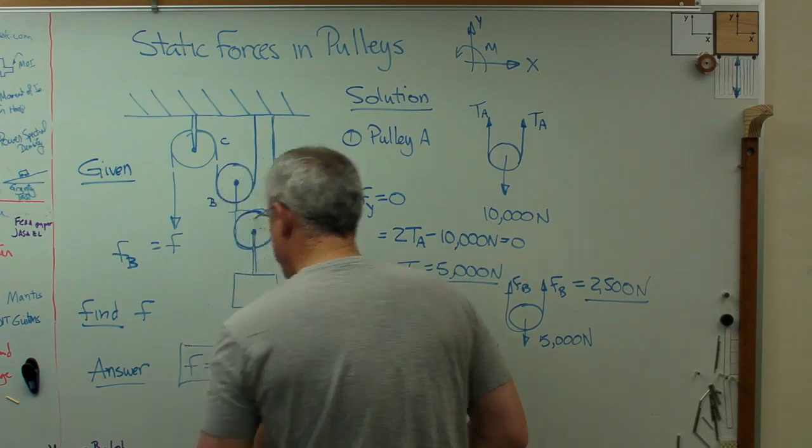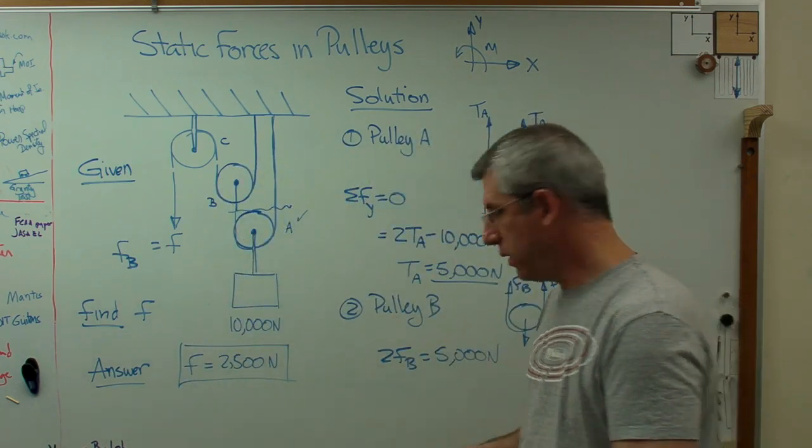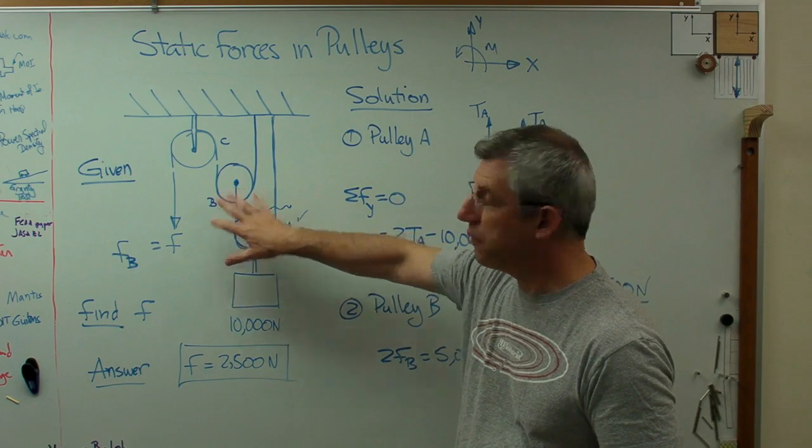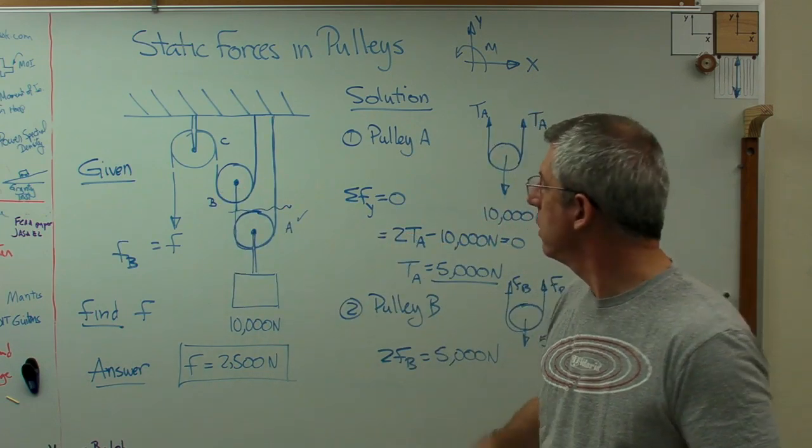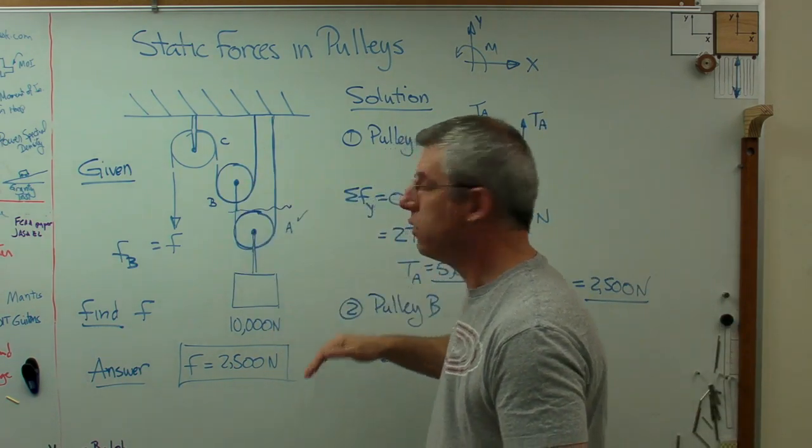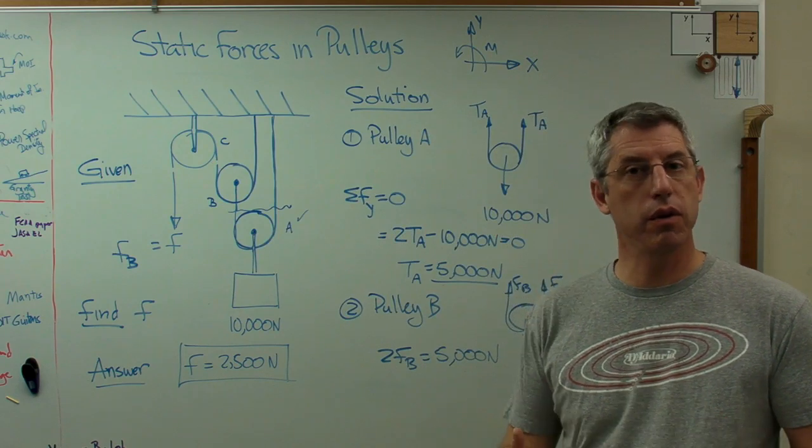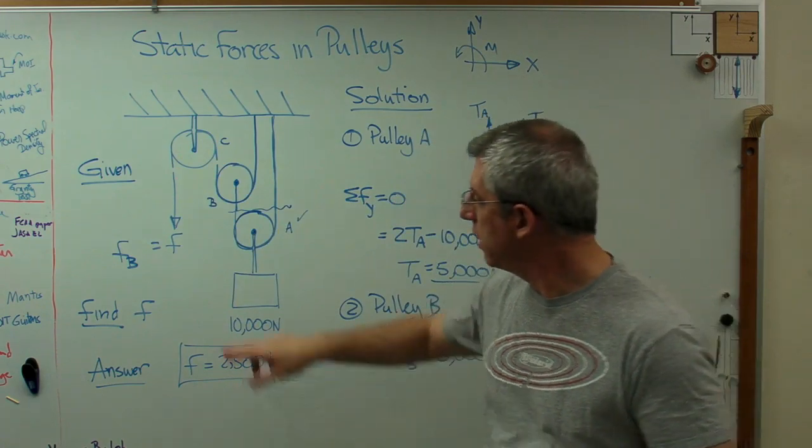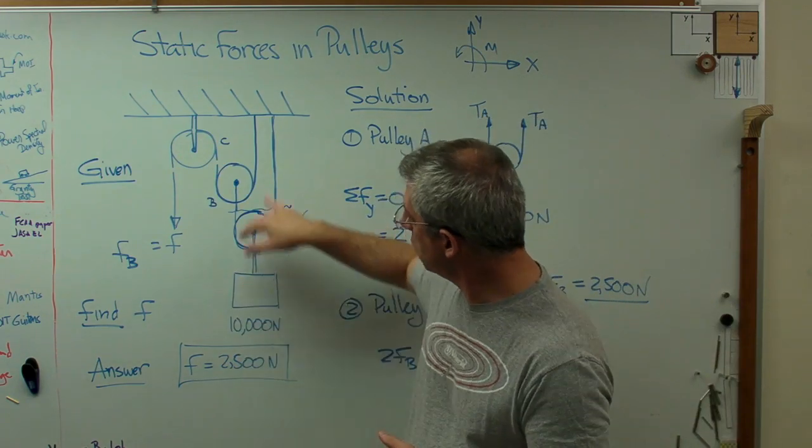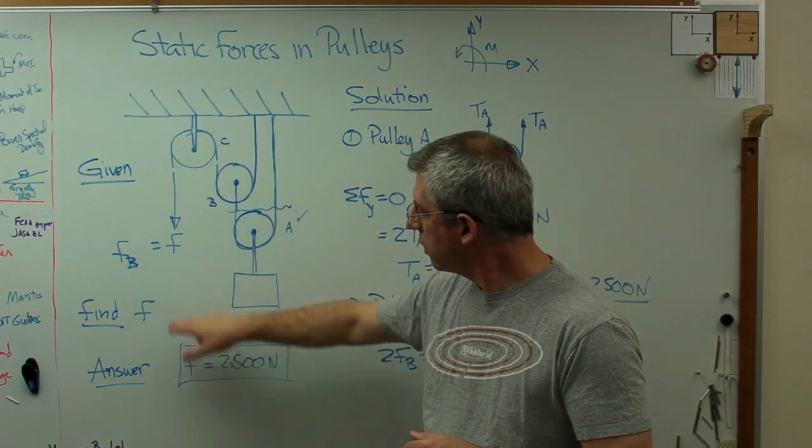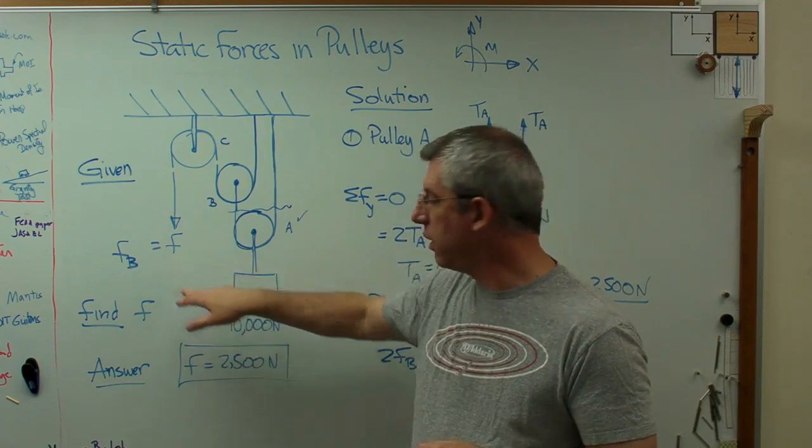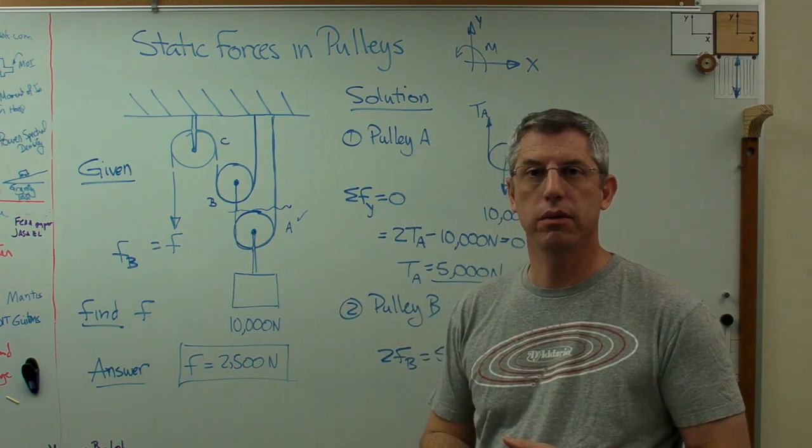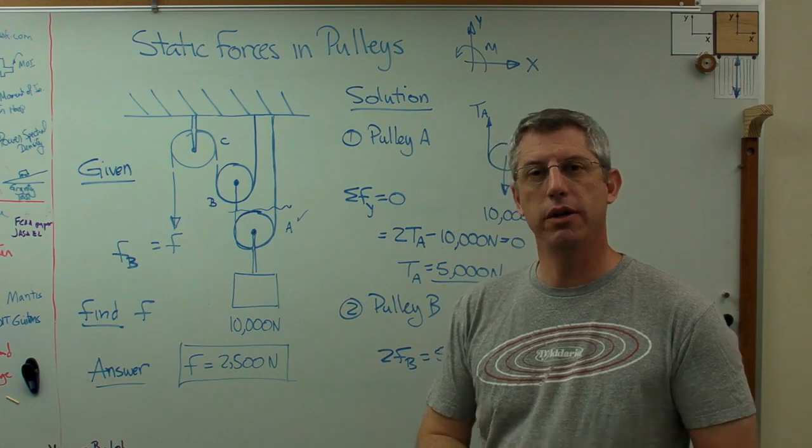And draw a box around it. So there you go. This isn't too hard. Started out with a fairly complicated system of pulleys. Worked our way through it using just basic statics. Sum of the vertical forces equals zero. And backed it all the way out to figure out what the tension in that cable is. That's how hard you have to pull. So using this system of pulleys, I can exert 2,500 newtons of force here and lift 10,000 newtons. Hope that helps. And I'll see you next time.